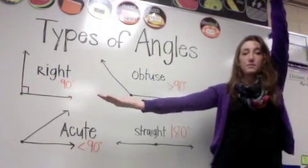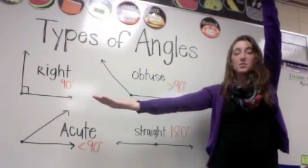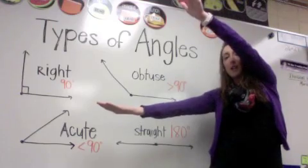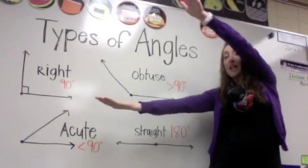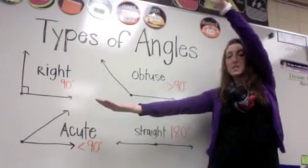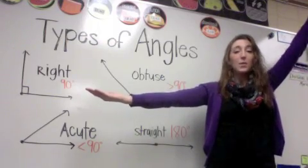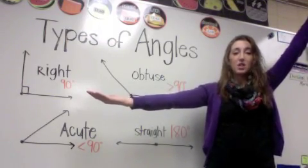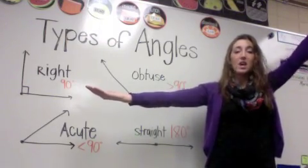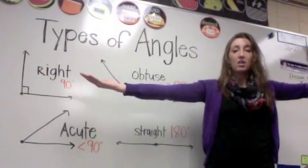Right angle, it is 90 degrees. We say acute angle, less than 90 degrees. We say obtuse angle, more than 90 degrees. And a straight angle is 180.